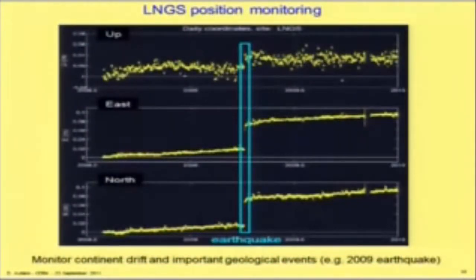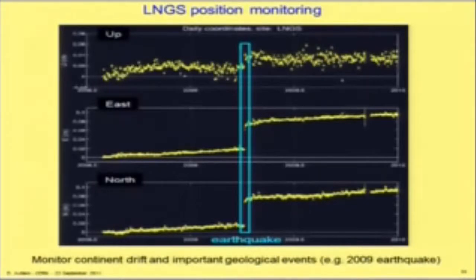With this high-accuracy system we can also monitor the position of the antenna in the external laboratory over a very long period. You see a smooth curve corresponding to continental drift, and then in April 2009 there was the effect of the earthquake which displaced the laboratory by about seven centimeters in the east and north direction. This gives you an idea of the accuracy with which you can perform this kind of measurement — unusual for high-energy physics but standard for high-accuracy geodesy.